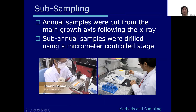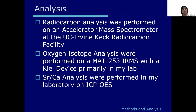Radiocarbon analysis is performed on an Accelerator Mass Spectrometer at the UC Irvine Keck Radiocarbon Facilities. Oxygen isotopes are measured on a MAT 253 isotope ratio mass spectrometer with a KIEL device measuring oxygen and carbon isotopes. Strontium-calcium analysis is measured on the ICP-OES — the Inductively Coupled Plasma Optical Emission Spectrometer — which measures how much of trace elements we have relative to calcium.